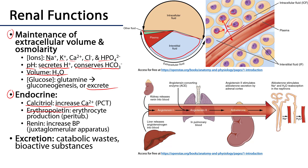The kidneys also secrete renin. There are juxtaglomerular cells as part of the juxtaglomerular apparatus, nestled between the renal corpuscle and the distal convoluted tubule. Depending on conditions, these cells have a fantastic ability of intrinsically regulating renal processes, and also secreting renin — a hormone which is the beginning of the RAA pathway. RAA stands for renin–angiotensin–aldosterone, a pathway whose ultimate effect on the body is to increase blood pressure.